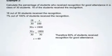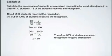From our proportion, we cross-multiply: 30 times x equals 18 times 100. Then isolate x by dividing by 30 to get x equal to 60. So therefore, 60% of the students received recognition for good attendance.